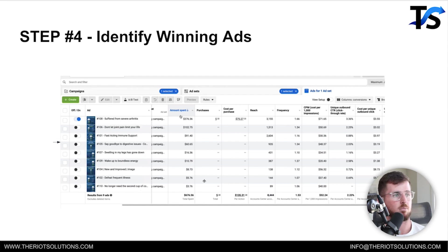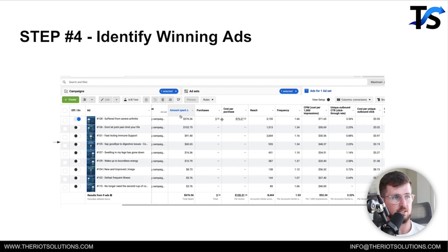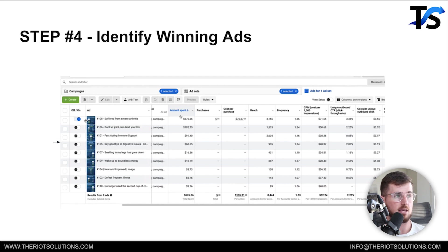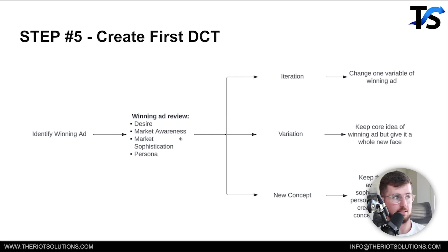Ad 108 is what won. I let Facebook tell me what wins based on amount spent. If one spent $300 with no purchases and another spent $100 with five purchases, I'm going to be more inclined toward the one with purchases. I essentially want to see what gets the most spend over those days and try to pick ads with more spend and a good amount of purchases — maybe not the top ad but within the first three to four. I'm only going to pick one winning ad.